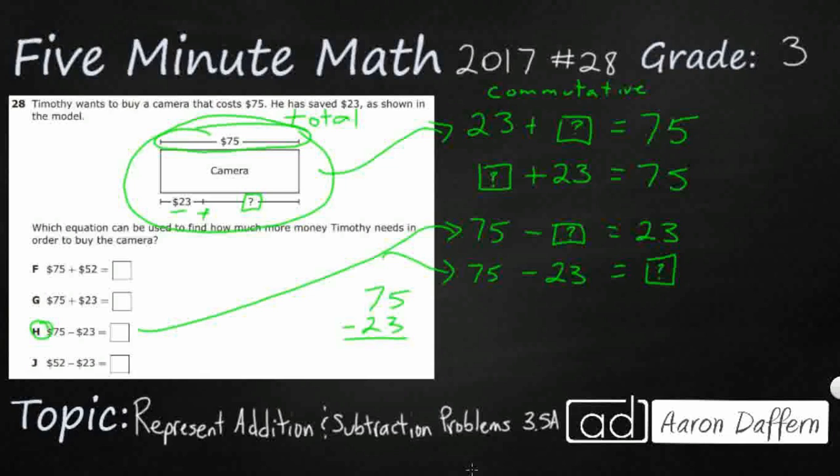So that's going to be 5 minus 3 is 2. So there's your 52. So that's where this 52 comes from right here. So they went ahead and did the work.